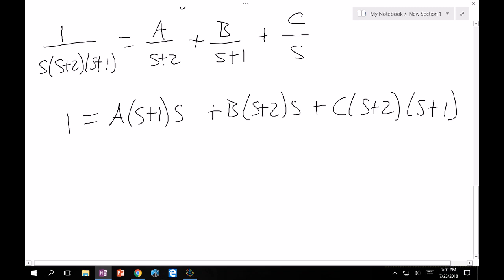Now you're in the special case where you can just let s be particular values to make certain constants go away. Let's say let s = 0. If we let s = 0, then the left-hand side is still 1. A goes away and B goes away. The one that doesn't go away is C. And then this becomes c times 2 times 1. Therefore, C has to equal 1/2.